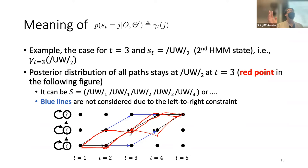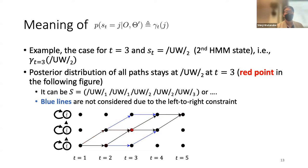In the left-to-right constraint, some paths are not counted because they don't pass through the target point. So this probability only considers sequences that actually pass through that point. This is the meaning of gamma_t. Now let's move to short quiz one.